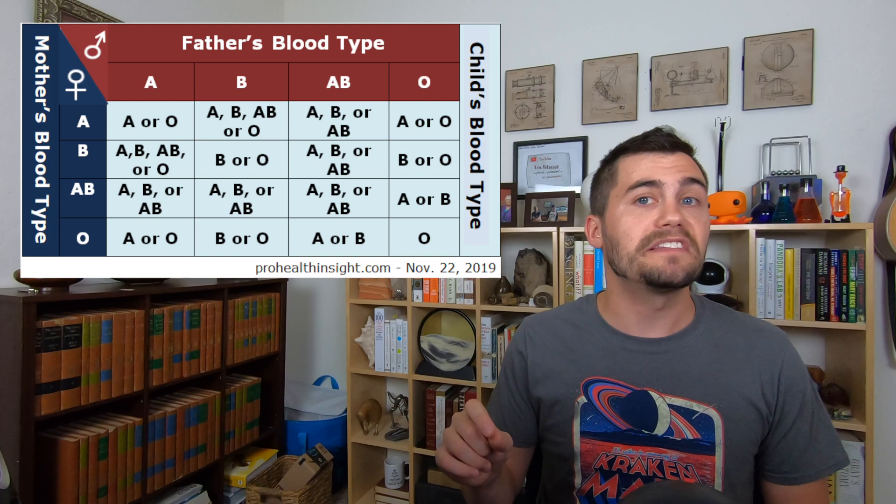Codominance is also responsible for blood type in humans. The allele for blood type A and B are codominant to each other, meaning you can be blood type AB. However, there is also an allele for type O blood, which is recessive to both A and B, like classical Mendelian genetics.